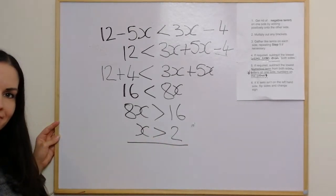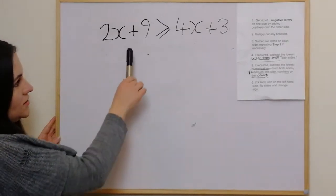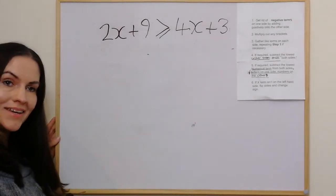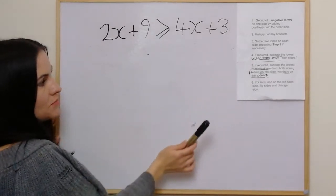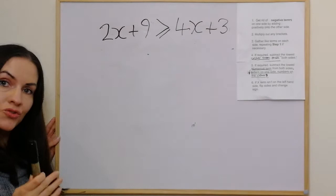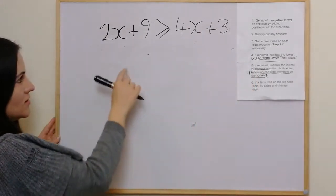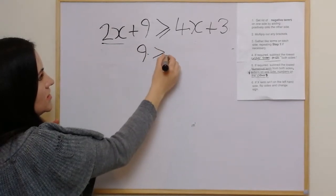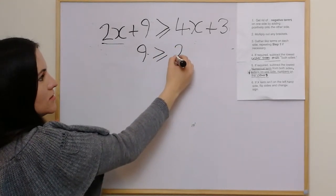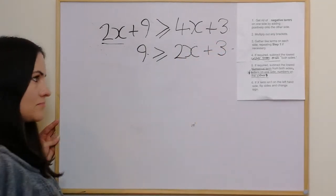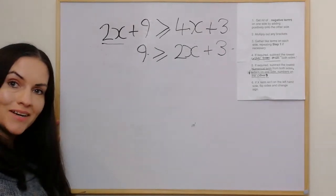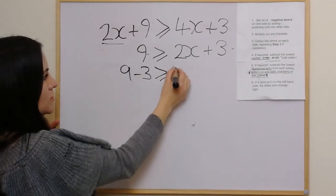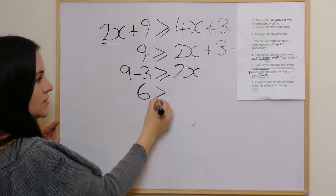In the next example, there aren't any negative terms so we don't need step one, no brackets so we skip step two, and no like terms to gather. We go to step four: subtract the lowest letter term, which is 2x, from both sides. On the left we just have 9, which is greater than or equal to 2x plus 3. Then step five: subtract the lowest numerical term, 3, from both sides. That gives us 6 is greater than or equal to 2x.